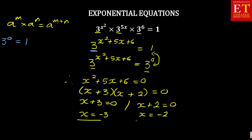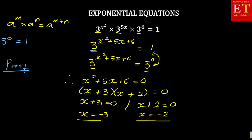So, these are the two values of x that are possible. Now, if you want to go further, you can do a proof to check if your answer is correct. But it is not necessary. Remember, when you're proving, you just do it outside — you don't have to show it in your paper.